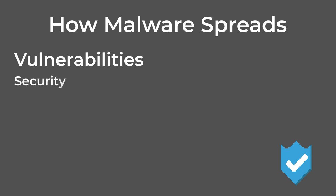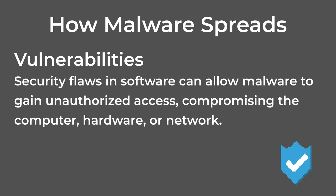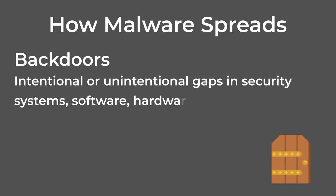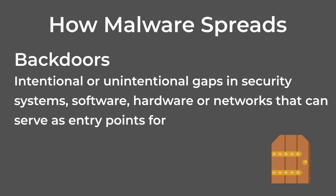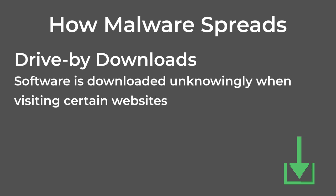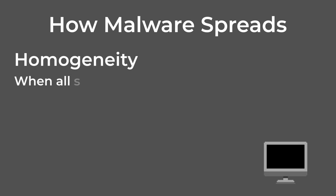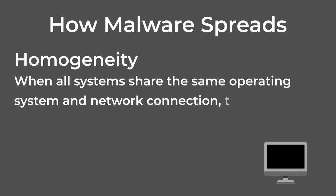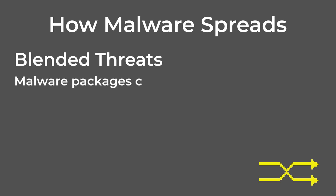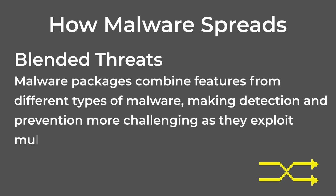Vulnerabilities — security flaws in software can allow malware to gain unauthorized access, compromising the computer, hardware, or network. Backdoors — intentional or unintentional gaps in security systems, software, hardware, or networks that can serve as entry points for malware. Drive-by downloads — software is downloaded unknowingly when visiting certain websites or clicking suspicious links, either with or without the user's knowledge. Homogeneity — when all systems share the same operating system and network connection, the risk of malware-like worms spreading to other computers increases. Blended threats — malware packages combine features from different types of malware, making detection and prevention more challenging as they exploit multiple vulnerabilities.